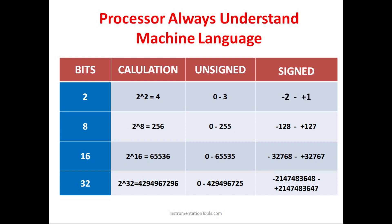Now we'll see how bit data is converted into integer form. If we take 2 bits, how many states are possible? Two to the power 2 is 4, so 4 states are possible: 00, 01, 10, 11. So 00 means 0, 01 means 1, 10 means 2, and 11 means 3. In case of unsigned integers this goes from 0 to 3, and for signed integers from minus 2 to plus 1.